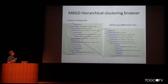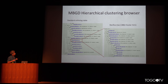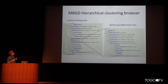We implemented this procedure and created the next version of MBGD. Here is an example: in the standard ortholog table, clicking on some genes from the pan-genome allows you to expand the view to see the Bacillus-specific ortholog tables.